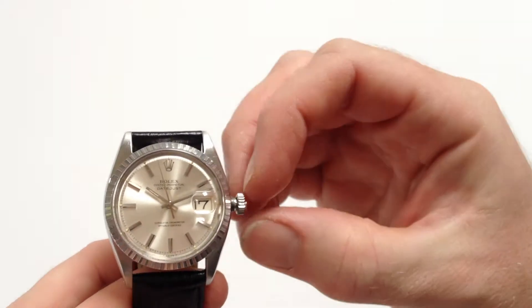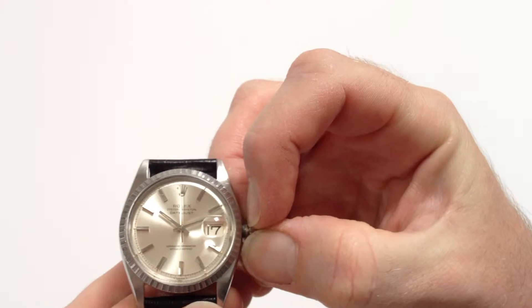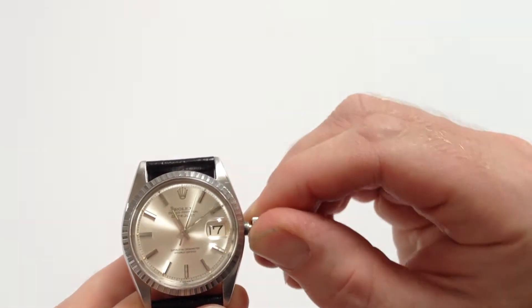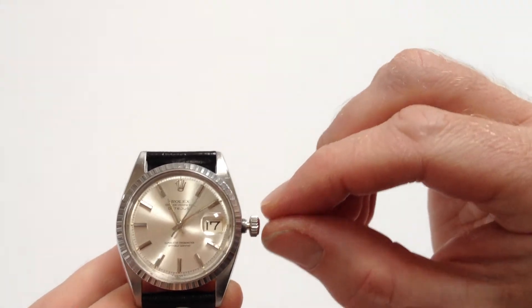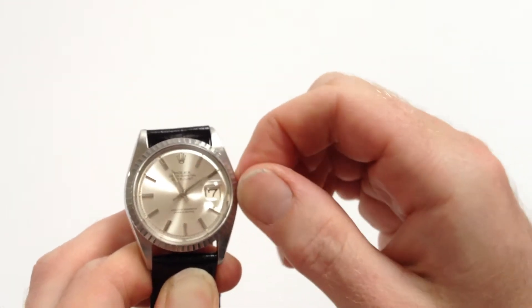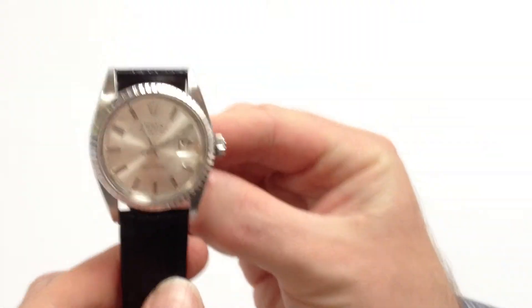To change the hand setting, pull the crown a further notch away from the body of the watch. You can advance the hands. And then to return the crown to the original position, push the crown towards the watch, twist away from you until the crown is tight to the body of the watch and the watch is then ready to be worn.